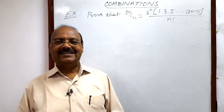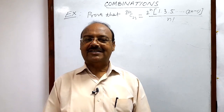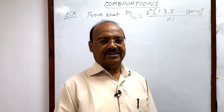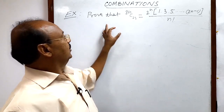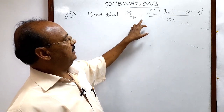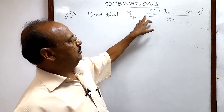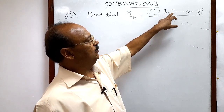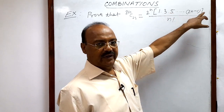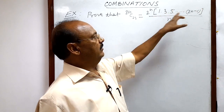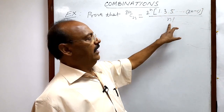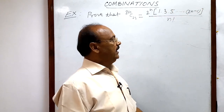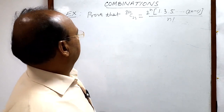Welcome students. Here you will see a very interesting question from the topic combinations. The question is: prove that 2nCn is equal to 2 to the power n, into 1 into 3 into 5 up to (2n minus 1), divided by n factorial. So let us see how we can approach this problem.